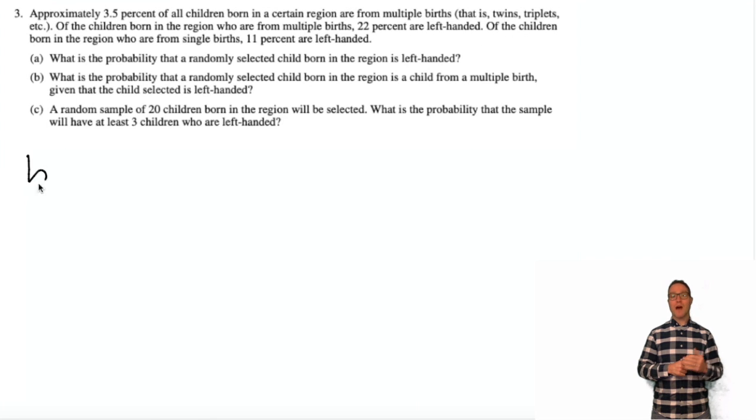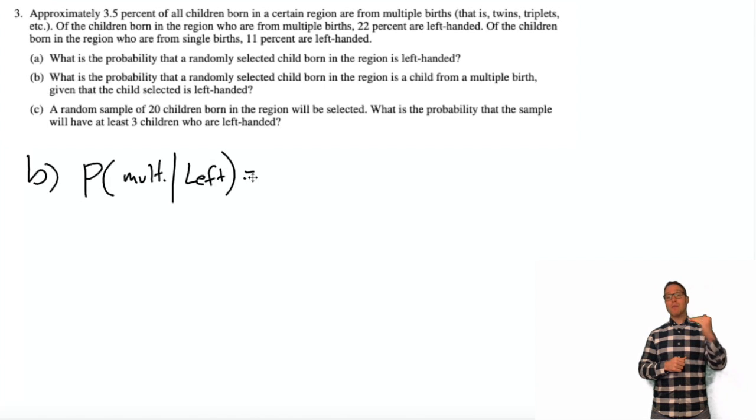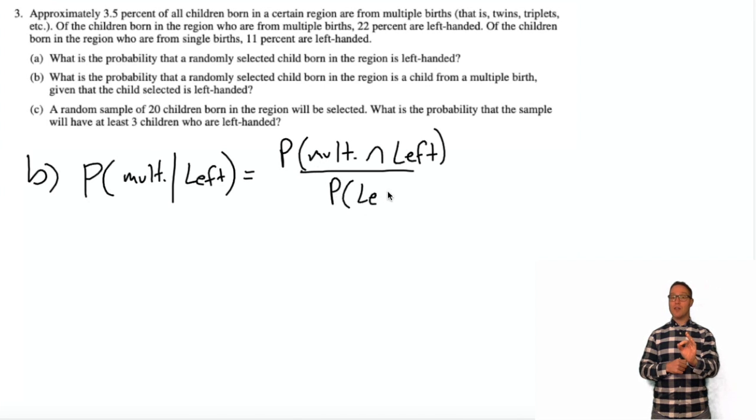Okay, Part B. What's the probability that a randomly selected child is from multiple births, given that they're left-handed? This is called conditional probability, and there's a formula for it. So the formula is the probability of both multiple birth and left-handed, divided by the probability of being left-handed. You always divide by the given, whatever the given information is. So what's the probability that someone's a multiple birth and left-handed? I already calculated that. That was 0.0077. And the probability of being left-handed, in general, was the answer to Part A, which was, let's check it out, 0.11385.